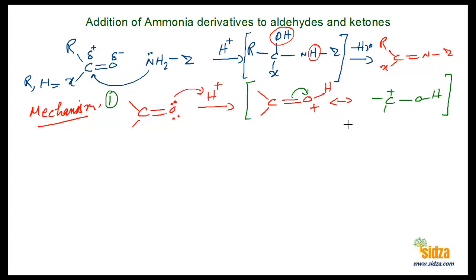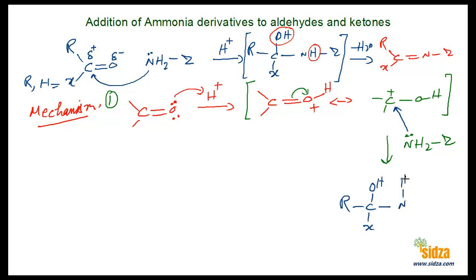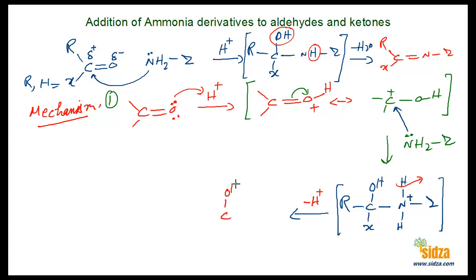In the second step, the nucleophile NH2Z — with its lone pair — attacks the electrophilic carbon. You now get a carbon bearing an OH group, two other groups R and X, and a nitrogen atom carrying two hydrogens and the group Z, with a positive charge on nitrogen. This intermediate is very unstable and releases a proton (H+), giving a neutral carbon bearing OH, R, X, and a nitrogen with one hydrogen and Z.